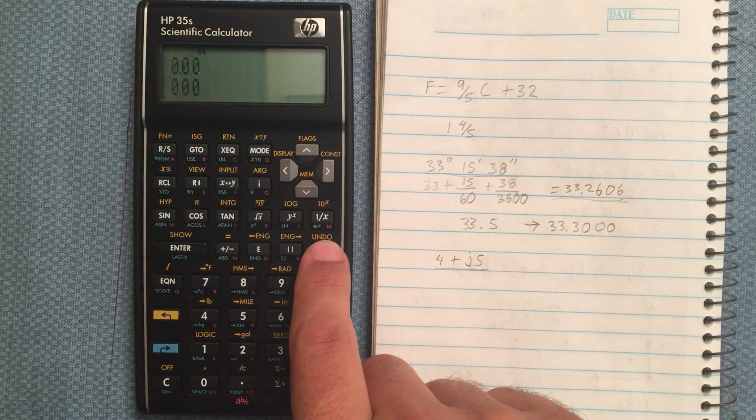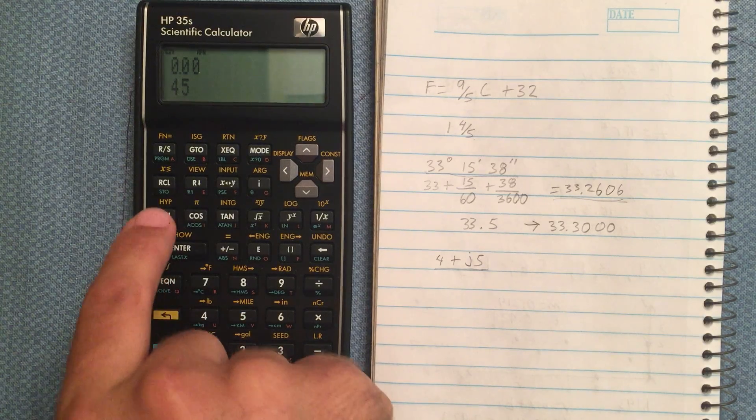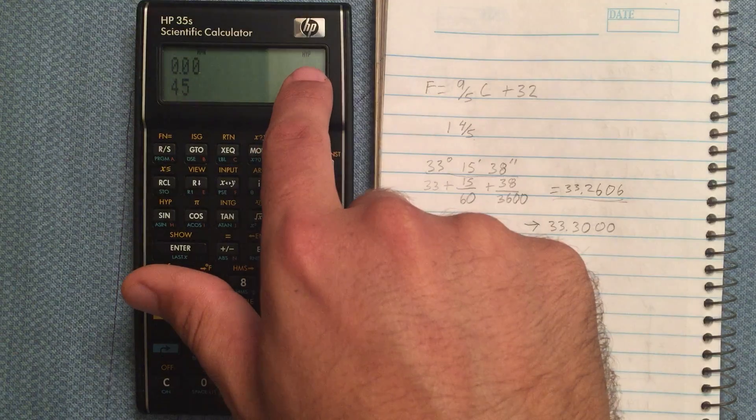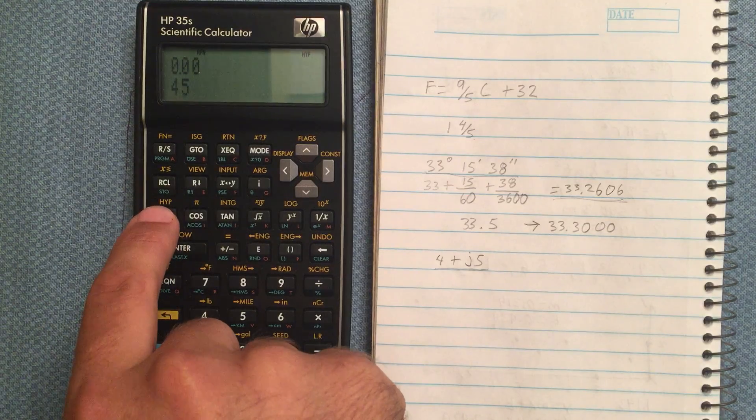Now if I wanted to do some hyperbolic functions, I would do shift to the hyperbolic. And that puts in this indicator here that says I'm in hyperbolic mode. So now I'm doing hyperbolic sine.